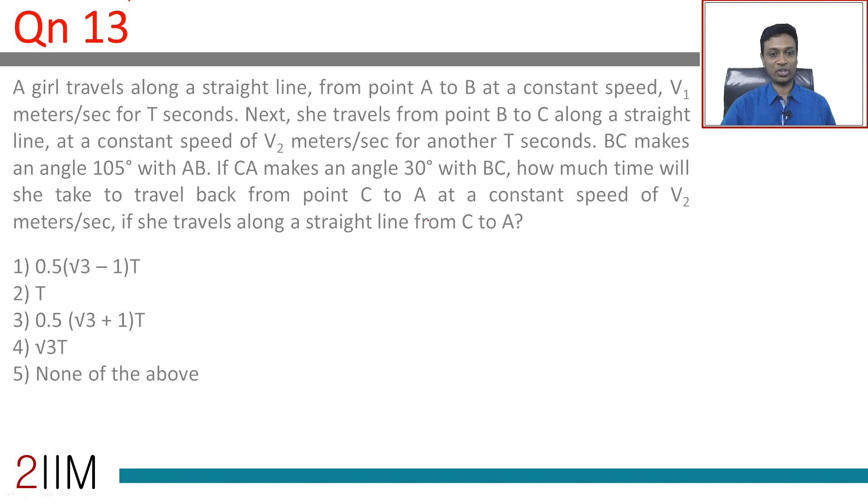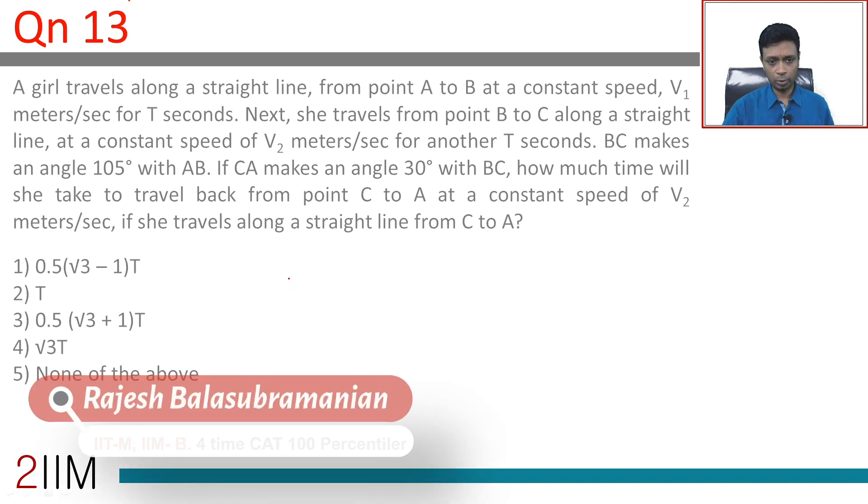Let us do this one. A girl travels along a straight line from point A to B at a constant speed of V1 meters per second for T seconds. So A to B.